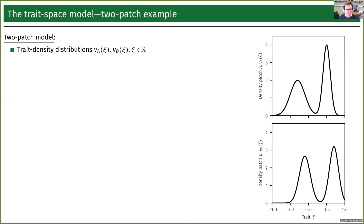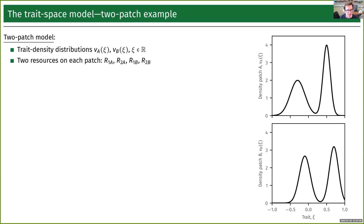Let's look at the basic setup of this two-patch model. The basic objects we're going to study are trait density distributions — one on patch A and one on patch B, shown in the figures on the right. In principle, these could be of any shape. In addition, we're going to have two resources on each patch — resource one and resource two. Our trait parameterizes a trade-off between your ability to take up resource one and resource two.